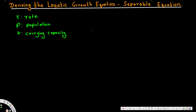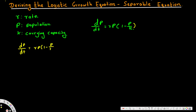This is the basic equation: dp/dt is equal to r·p·(1 minus p over k). This is the one we are going to use. We can also write this in a different way: dp/dt is equal to r·p·(1 minus p over k).